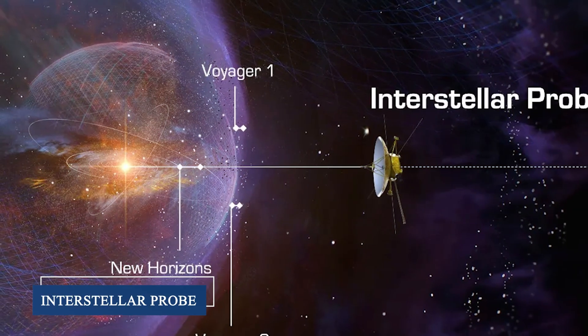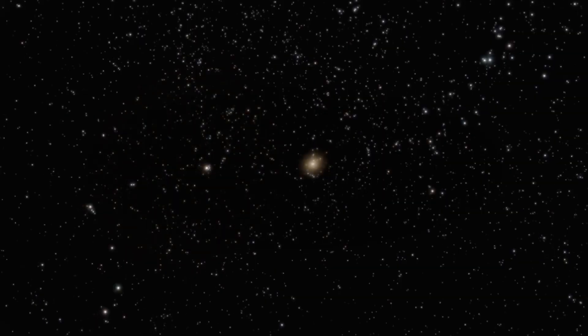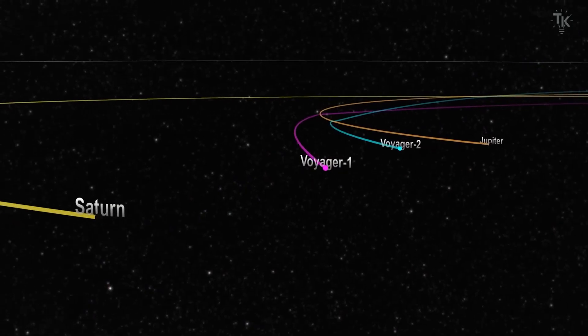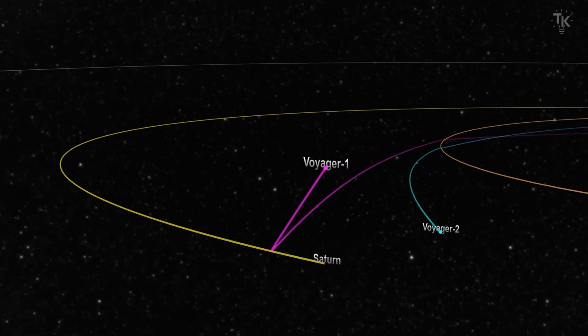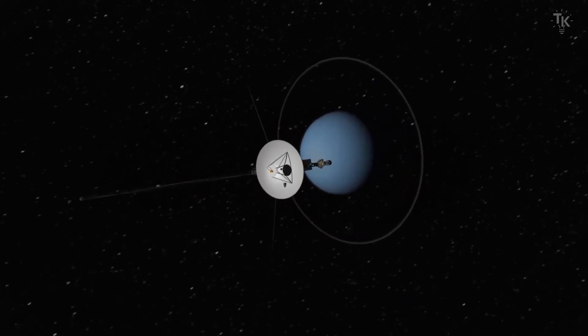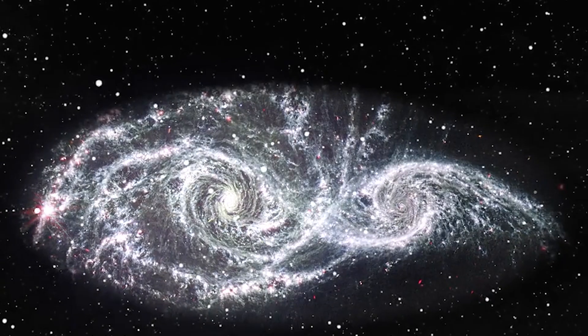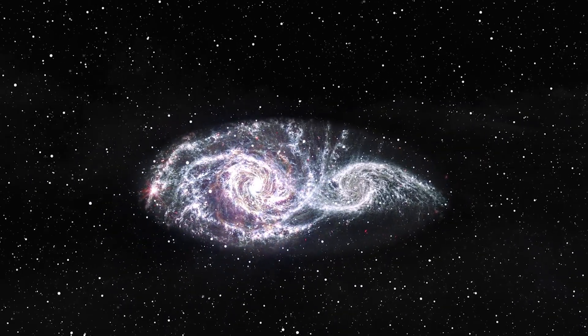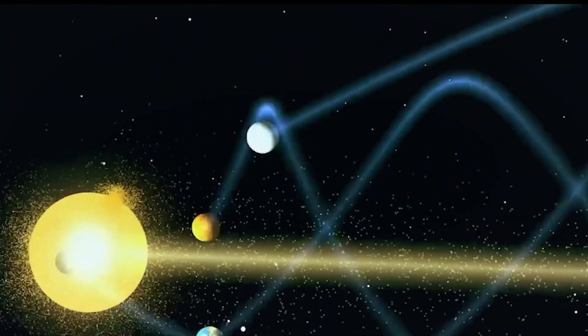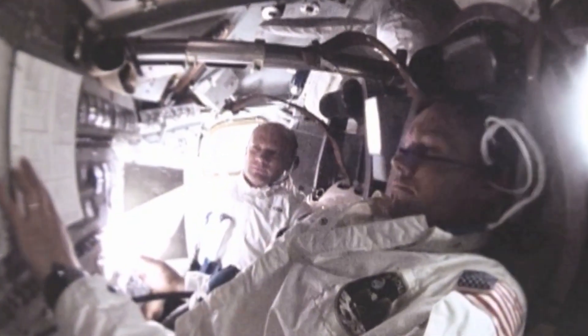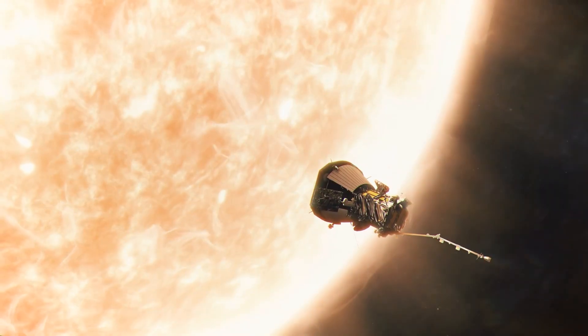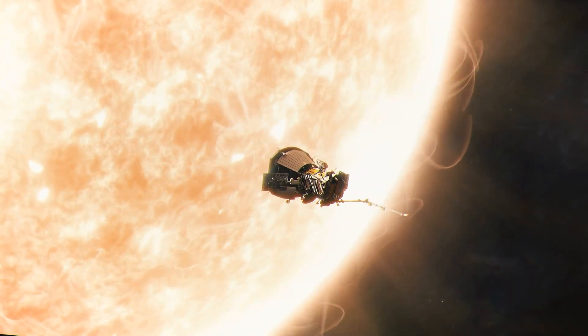Future missions like the proposed interstellar probe will venture even further into these regions, potentially reaching distances of 1,000 astronomical units from the Sun. That's 1,000 times farther than Earth's orbit. These missions will give us our first detailed look at how our solar system interacts with the galaxy's magnetic fields and dark matter structures. The implications of these discoveries extend far beyond pure science. Understanding the cosmic environment around our solar system is crucial for planning future interstellar missions, and protecting astronauts from radiation during long-duration spaceflights. The Parker Solar Probe and Solar Orbiter missions are already studying how our Sun's magnetic field interacts with these galactic forces.